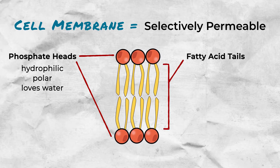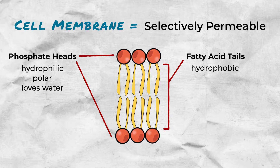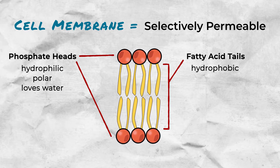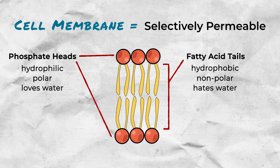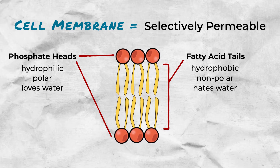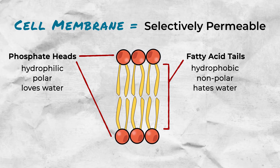However, the interior of the cell membrane is hydrophobic, which is the opposite of hydrophilic — it's non-polar and water-hating. So once water gets through the phosphate heads, it can't get through the fatty acid tails. That's what we mean by selectively permeable.